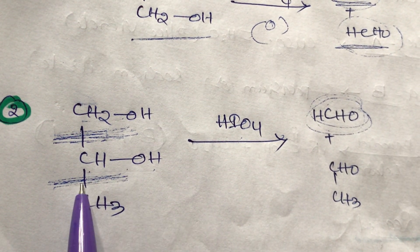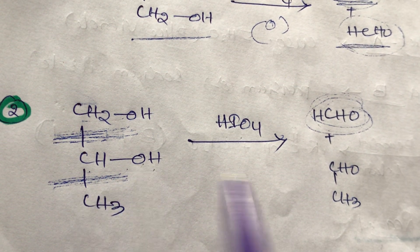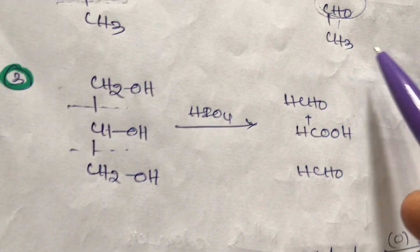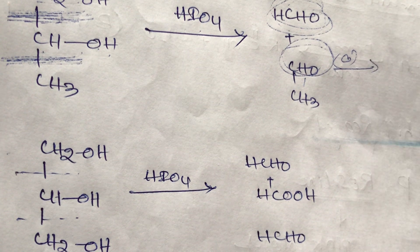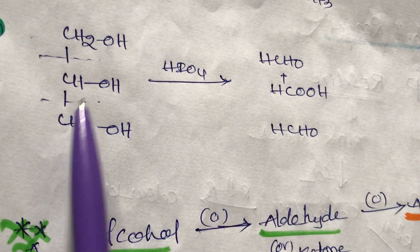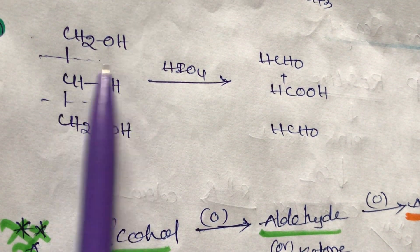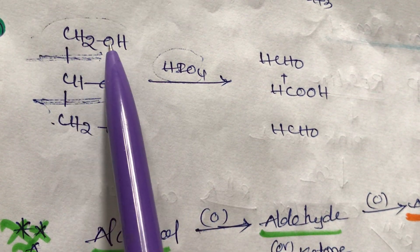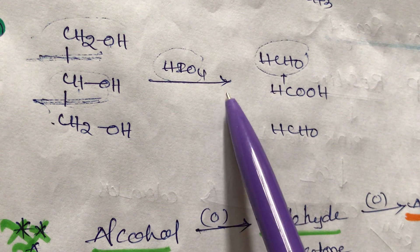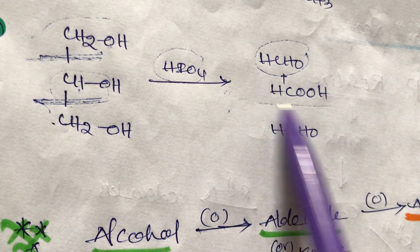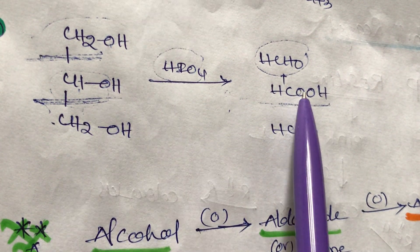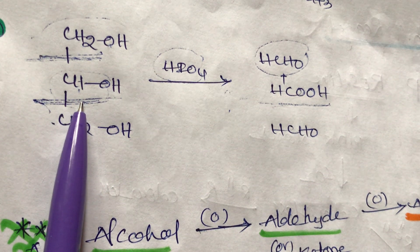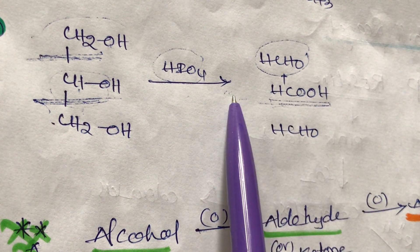In another example with two cleavages, primary alcohols give aldehydes and secondary alcohols give ketones. For further oxidation, if an aldehyde is present it can oxidize to carbon dioxide. Glycerol contains two primary alcohols and one secondary alcohol. Primary alcohols on oxidation with HIO4 give aldehydes, and secondary alcohols on oxidation give ketones, which further oxidize to give carboxylic acid.